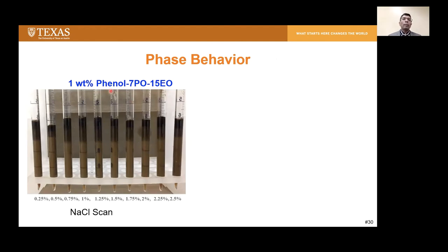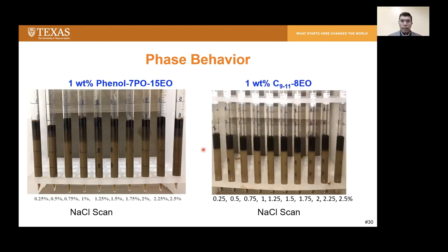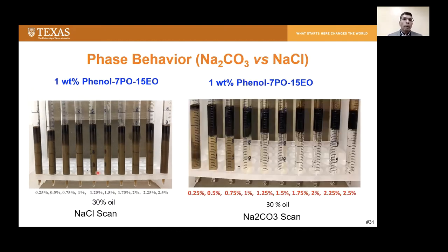The phase behavior with phenol-7PO-15EO using a sodium chloride scan for SP shows no type 3, but very good type 1 across a wide range — all vials look nearly identical with a very wide type 1 region. Similarly with C9-11-8EO in a sodium chloride scan, exactly the same behavior is observed. With sodium carbonate scan for C9-11-8EO, though the oil is highly acidic, sodium carbonate did not work — we see totally type 2 region. This is likely because sodium carbonate reacted with the acidic components of the oil, forming hydrophobic surfactants in situ, preventing good phase behavior.